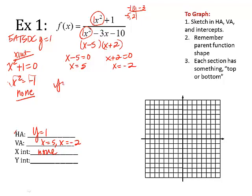What about y-intercept? The y-intercept rule says you take all the x's and make them 0's. So I have 0 plus 1 over 0 minus 3 times 0 minus 10. So I have 1 over negative 10. So my y-intercept is 0, negative 1/10. It's barely under the y-axis, but it's there.